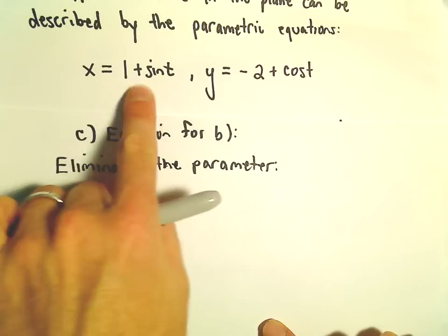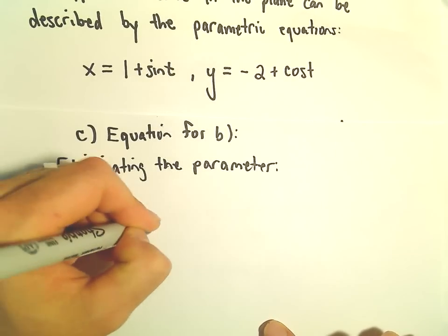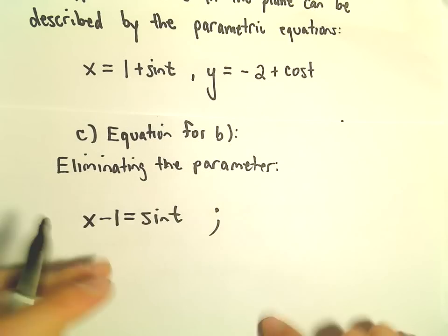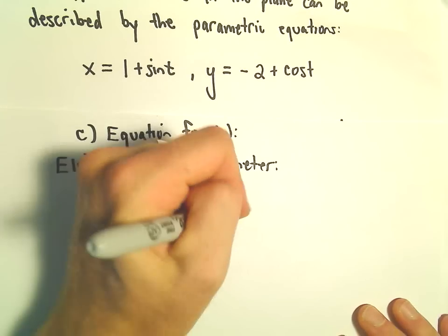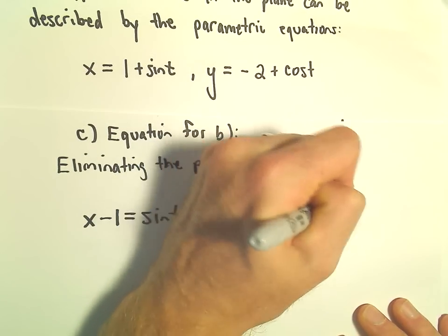Let's see. If we notice our x equals 1 plus sine t, we can subtract 1 and get x minus 1 equals sine t. We can add 2 and have y plus 2 equaling cosine t.